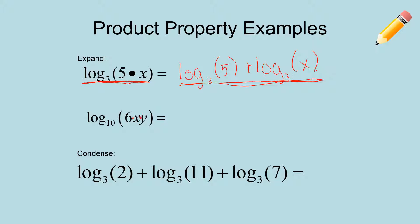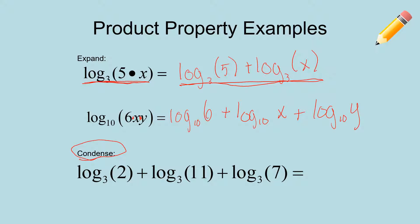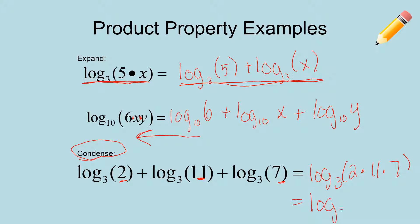Next, we have log base 10 of 6 times x times y. That expands to log base 10 of 6 plus log base 10 of x plus log base 10 of y. We had three things being multiplied, so we expand into three separate logs being added. Now to condense — going the other direction — we write it as one log base 3, with all the inside numbers multiplied: 2 times 11 times 7. That equals 154, so our final answer is log base 3 of 154.